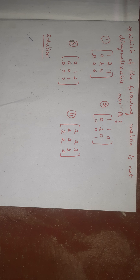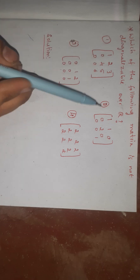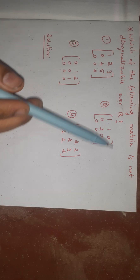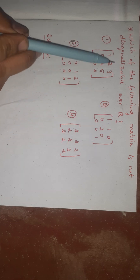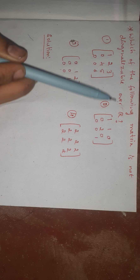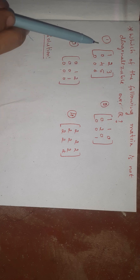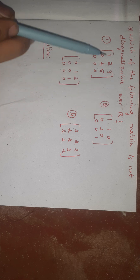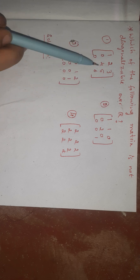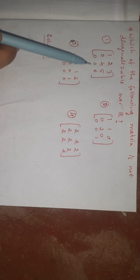The question is: which of the following matrices is not diagonalizable over R? Option 1: Matrix with entries 1, 2, 3, 0, 4, 5, 0, 0, 6.